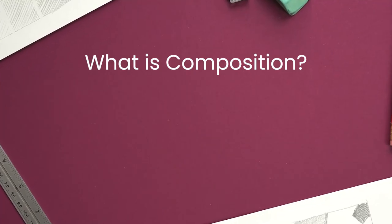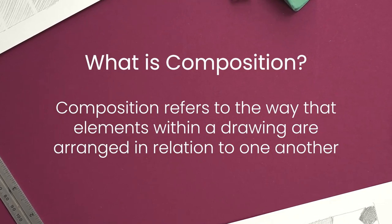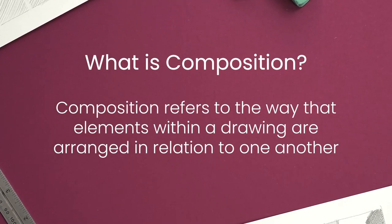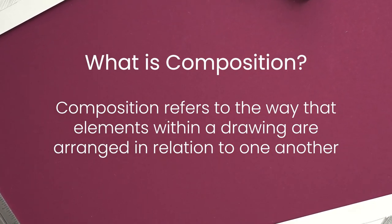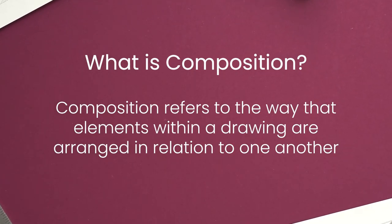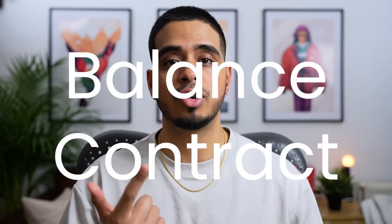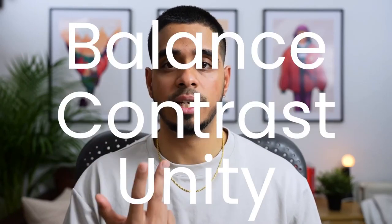Before we talk about balance, let me give you a quick explanation of what composition means. Composition refers to the way that elements in a drawing or painting are arranged in relation to one another. The few principles of composition that we'll be covering today will be balance, contrast, and unity.